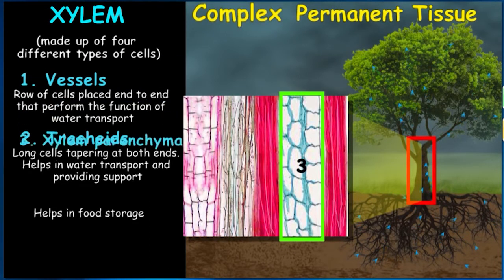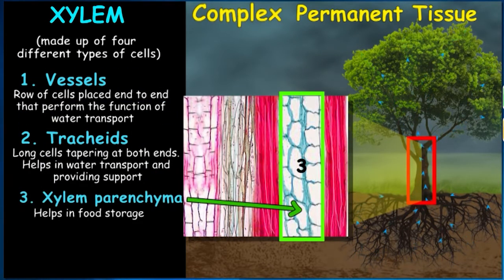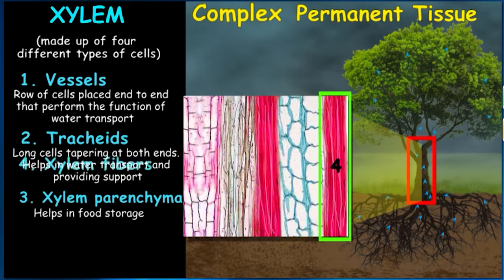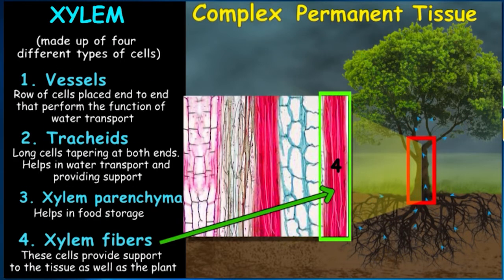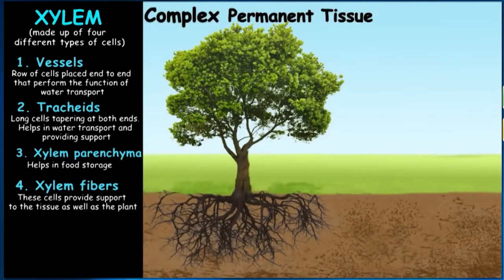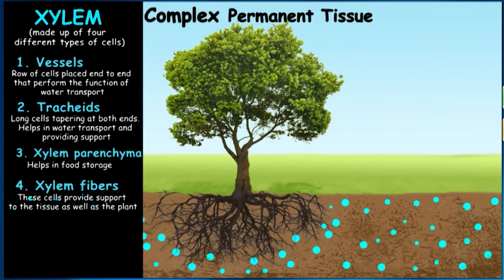The third type is xylem parenchyma. As we know, parenchyma stores food, so xylem parenchyma also performs the same function of food storage. Lastly, there are xylem fibres — thread-like cells that provide support to the tissue as well as the plant. With this, we have completed looking at how water is transported from the roots to all the parts of the plant.